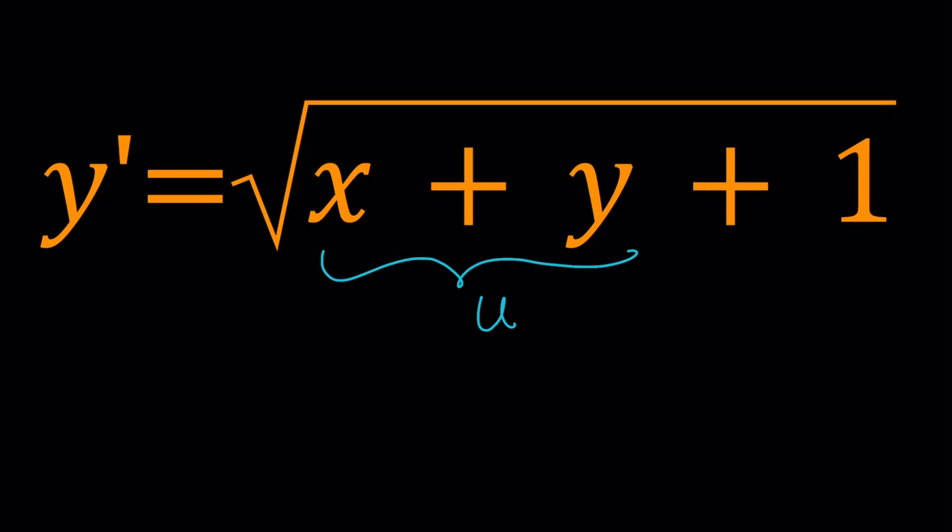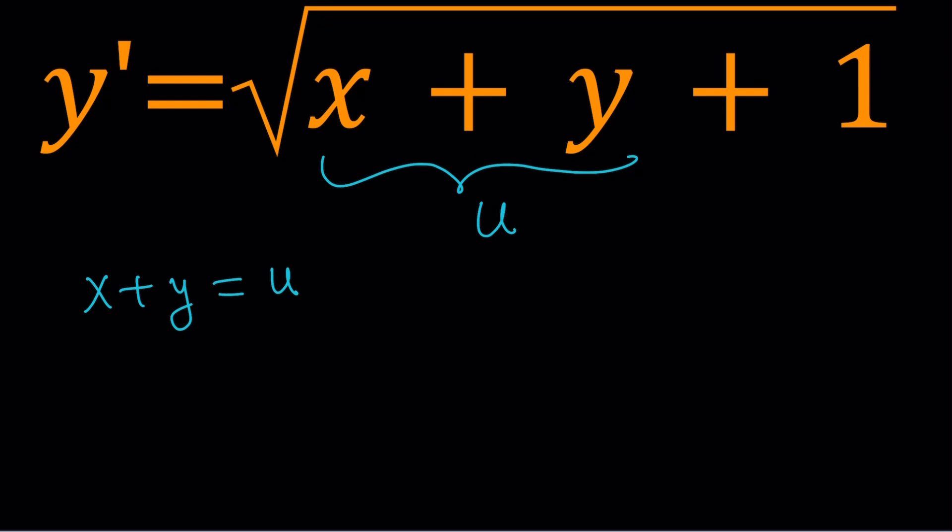And when you set that, so x plus y is equal to u, differentiate both sides. Because one of the things that you want to get from here is y prime in terms of u prime. If you differentiate both sides with respect to x, it's going to be 1 plus y prime equals u prime. Since we're differentiating with respect to x, we're just going to use the prime notation for now. Now, here we can isolate y prime.